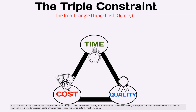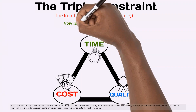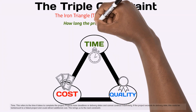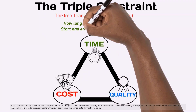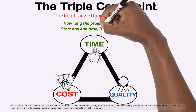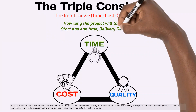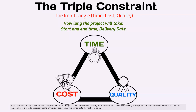Time. This refers to the time it takes to complete the project. Projects have deadlines or delivery dates and cannot continue indefinitely. If the project exceeds its delivery date, this could be tantamount to a failed project and could attract additional cost. This brings us to the next constraint.